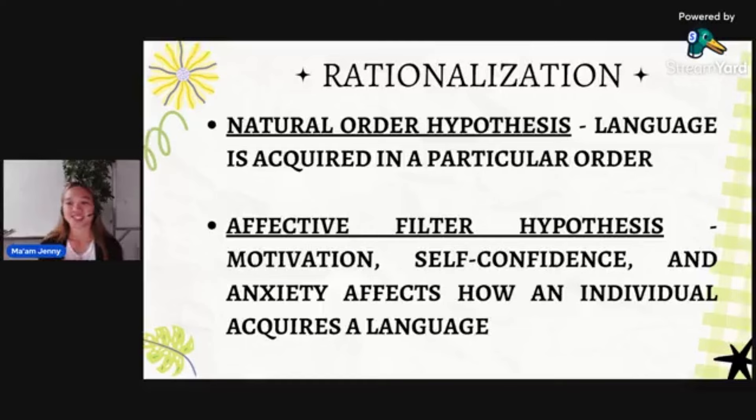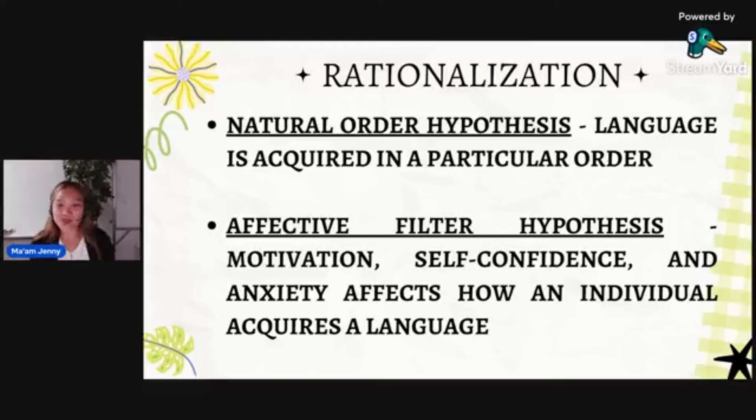I don't know, but how old was Rizal when he wrote his first poem? Because he was so brilliant, maybe he didn't follow the natural order hypothesis. Just for us normal people — some people are just so smart and know many languages at a very young age.